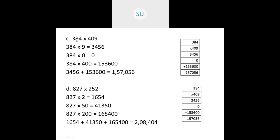Question 2C: 384 into 409. First multiply 384 by 9 to get 3,456. Then multiply 384 by 0, which gives 0. Then multiply 384 by 400 — we write two zeros and multiply 384 by 4 to get 1,536, so we have 1,53,600. Adding 3,456 and 1,53,600 gives 1,57,056.